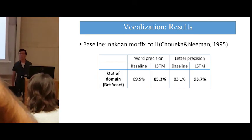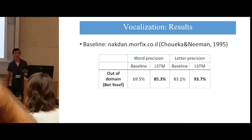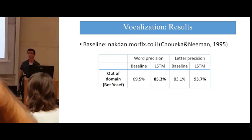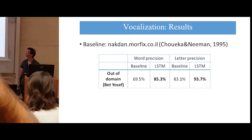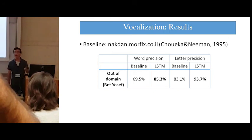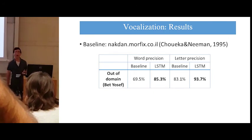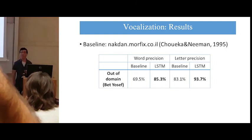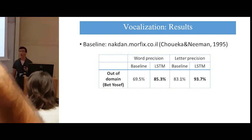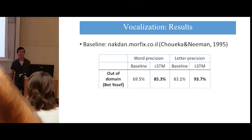We compare our method to Morphix's Nakdan. Morphix's Nakdan is the leading commercial vocalization utility based on an algorithm written by Professor Yaakov Choueka. We check both word precision and letter precision, and in both cases our method achieved a higher score than Morphix's Nakdan by a large margin. In letter precision we have an over 10% gain, and with word precision even more so — an over 15% gain.